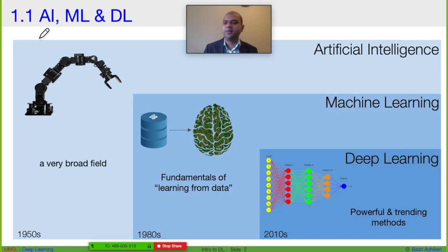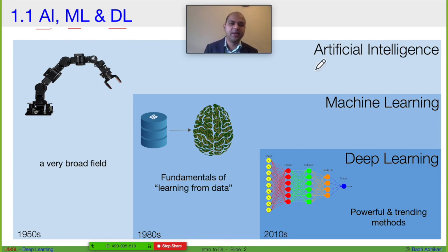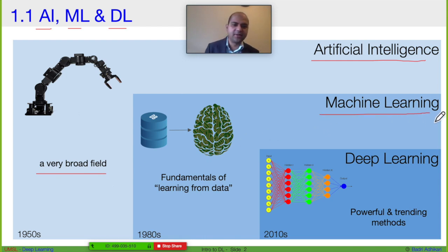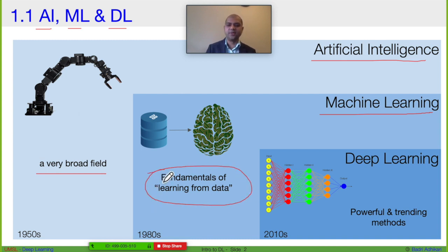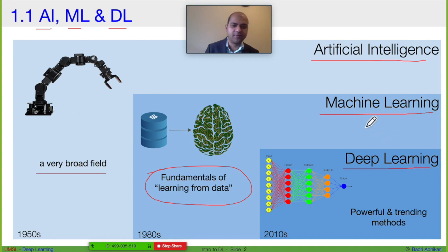Although many people use the term artificial intelligence, machine learning and deep learning interchangeably, they are different. Artificial intelligence is a very, very broad field. And machine learning is a subset within artificial intelligence that deals with fundamentals of learning from data. And deep learning is a further subset of machine learning.